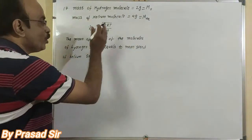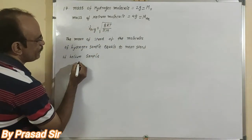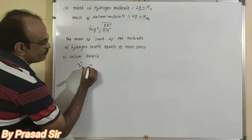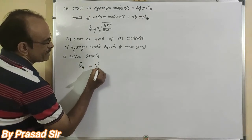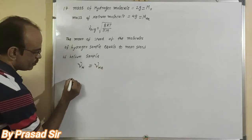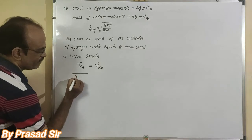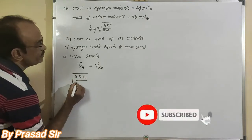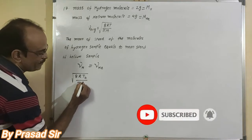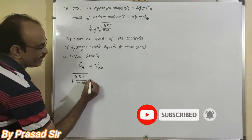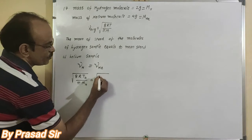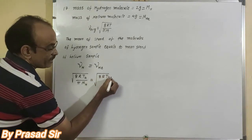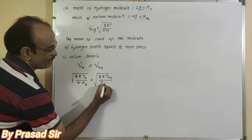Both mean speeds are equal. So here, √(8R · T_hydrogen / π · M_hydrogen) = √(8R · T_helium / π · M_helium).